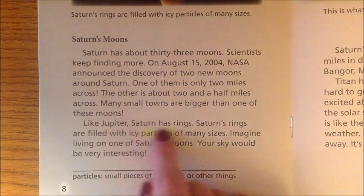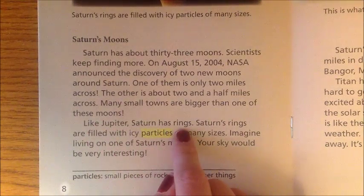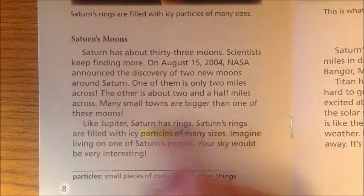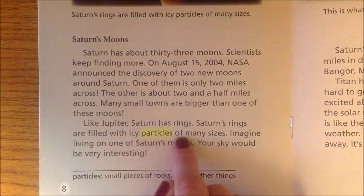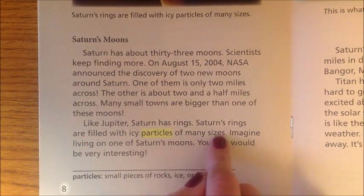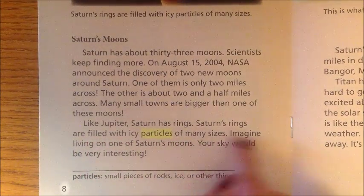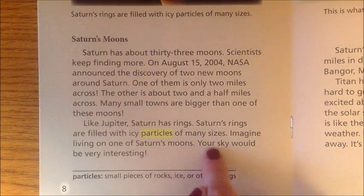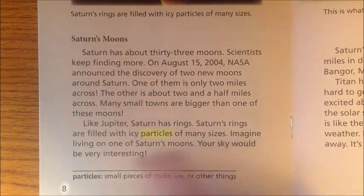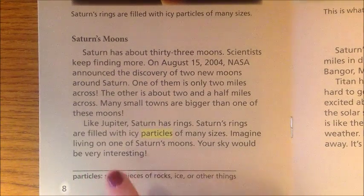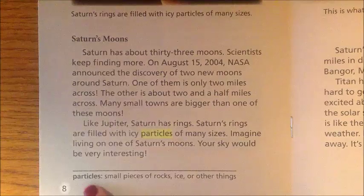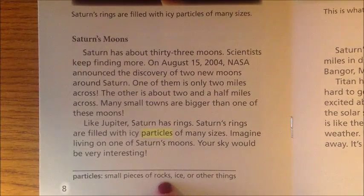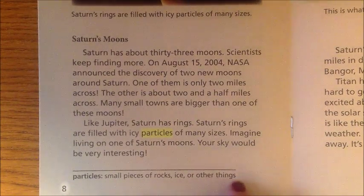Like Jupiter, Saturn has rings filled with icy particles of many sizes. Imagine living on one of Saturn's moons — your sky would be very interesting. Particles are small pieces of rocks, ice, or other things.